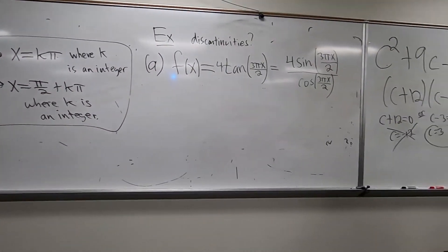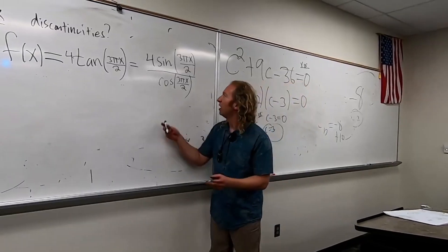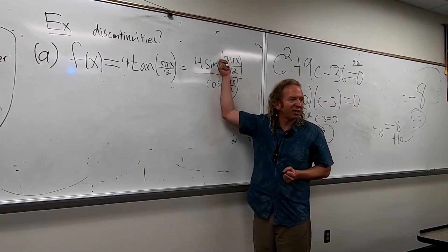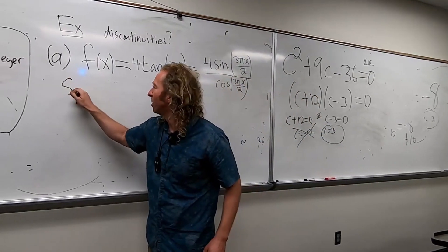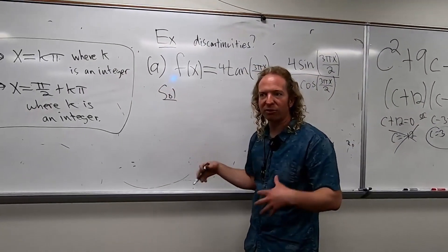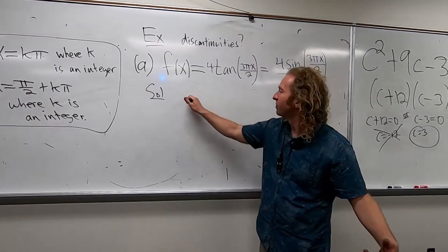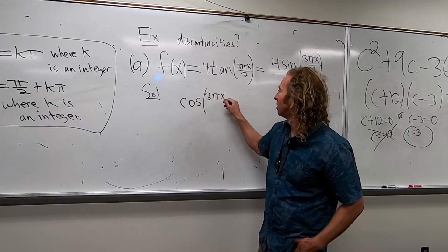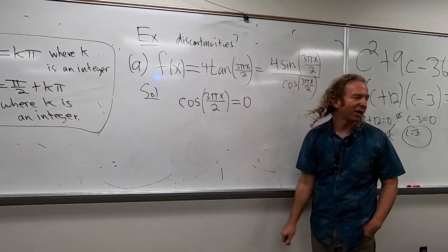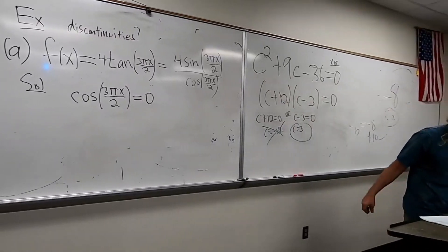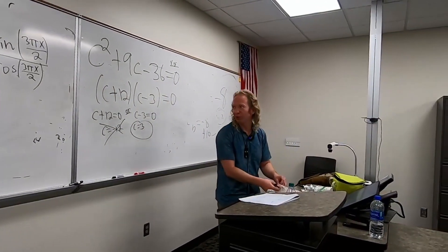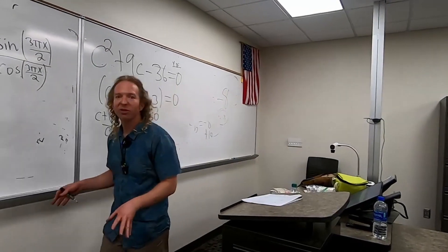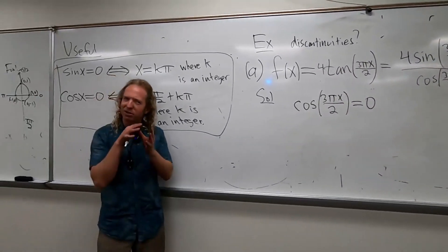And then here we have cosine 3 pi x over 2. So now you're thinking, okay, this function, where is it not continuous? Well, it's going to be discontinuous whenever the bottom is 0, right? Because you can't divide by 0. So what you do is you set the bottom equal to 0 to find out where it's messed up. Where is it not continuous? So you set cosine of 3 pi x over 2 equal to 0.